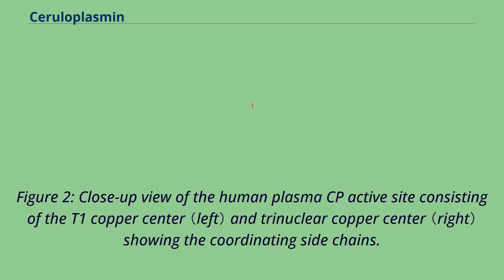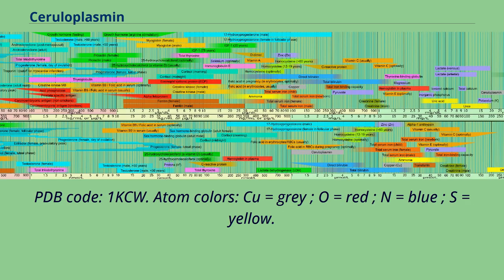Figure 2 shows a close-up view of the human plasma ceruloplasmin active site, consisting of the T1 copper center and trinuclear copper center, showing the coordinating side chains. PDB code: 1KCW. Atom colors: Cu = gray, O = red, N = blue, S = yellow.